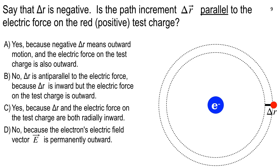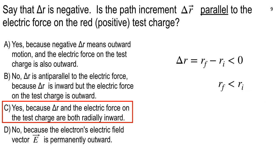Most of you voted correctly. So delta R is negative — that means it's going from high to low. Delta R is R final minus R initial, so if your final is smaller than your initial, you have a negative delta R. For this one, the electric field and the electric force point towards the electron in the middle, because the positive test charge tells you what any positive charge would do.